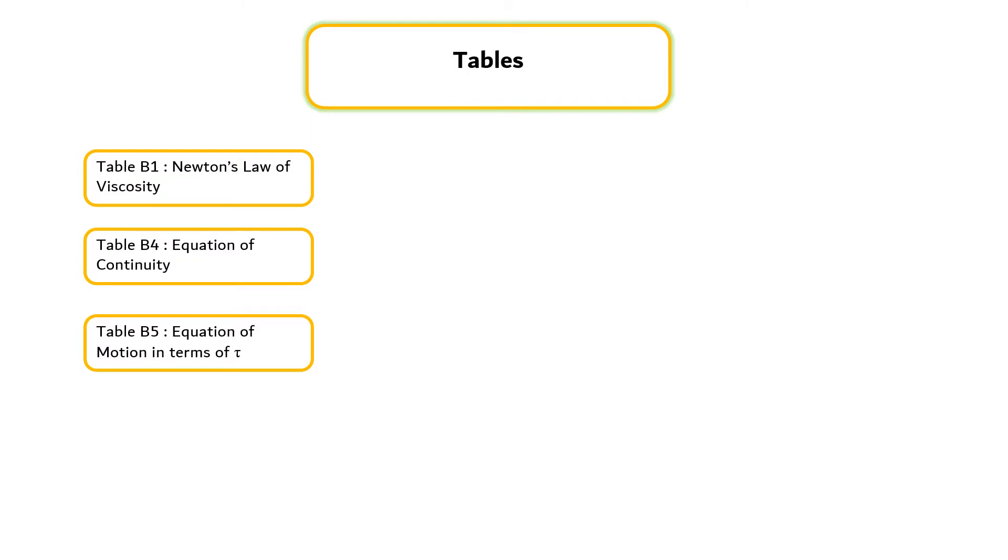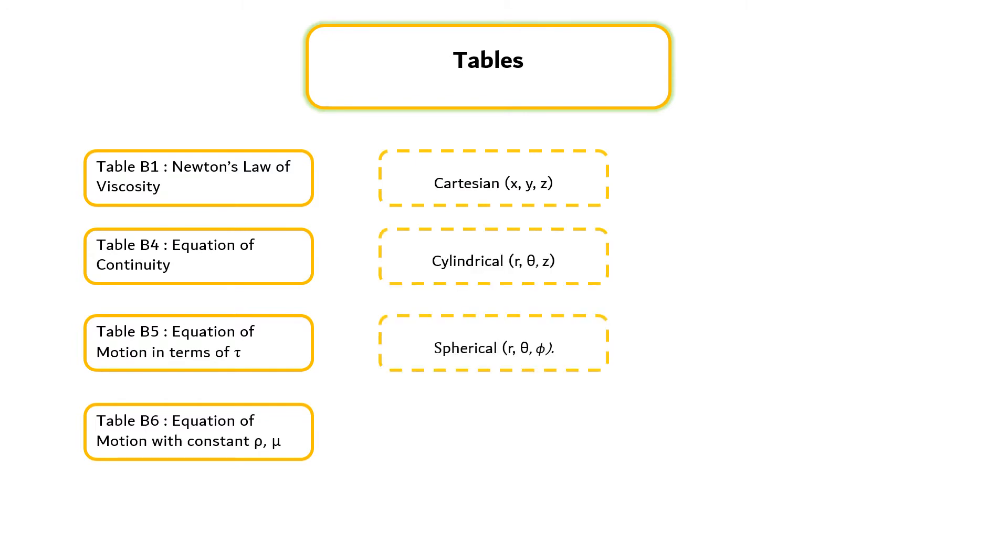All key equations are available in the textbook, particularly Table B1 for Newton's law of viscosity, Table B4 for equation of continuity, Table B5 for equation of motion in terms of Newtonian fluid with constant rho and mu for Cartesian, cylindrical, and spherical coordinate systems.